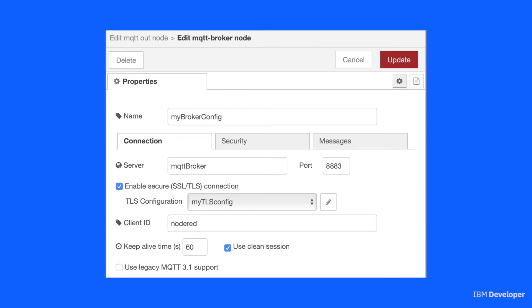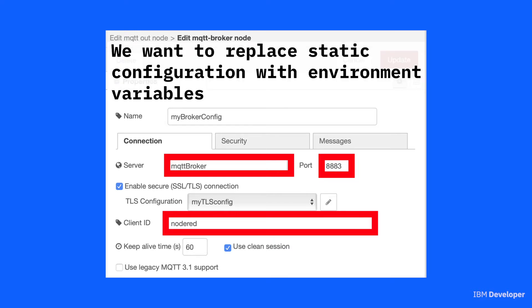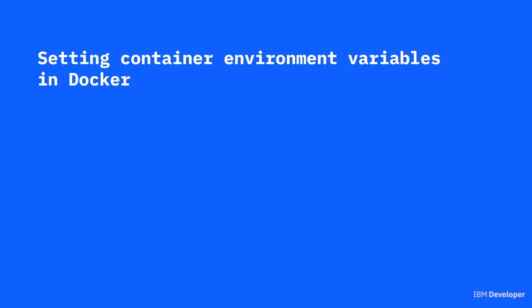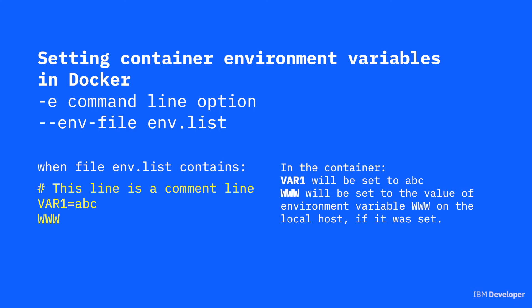In Node-RED you normally capture configuration in the configuration properties of a node, and that embeds the configuration within the container. We're going to look at how you can provide environment variables to the container and replace the static configuration in the node config with environment variables. Using Docker, we'll show you two ways to pass environment variables: the lowercase -e command line option to set a variable directly or from your local environment, and the --env-file option where you pass in a file containing environment variable definitions.